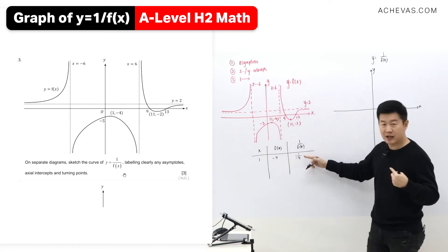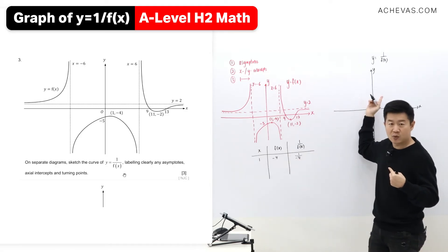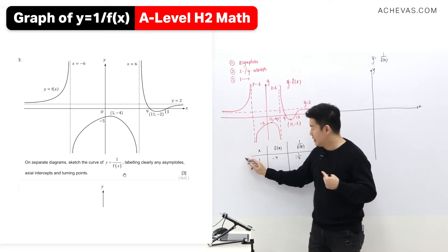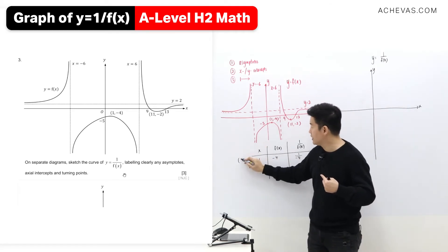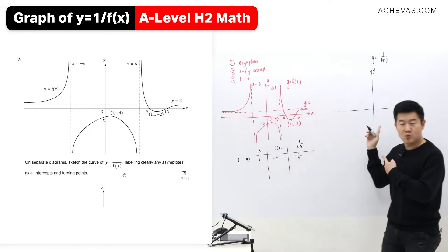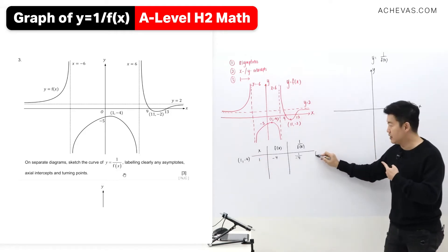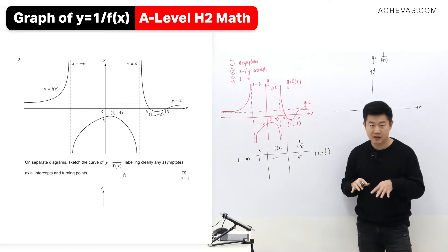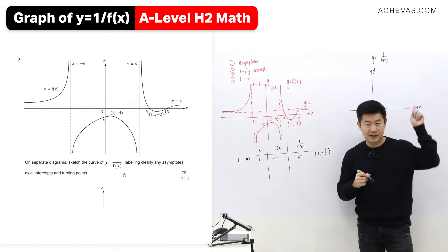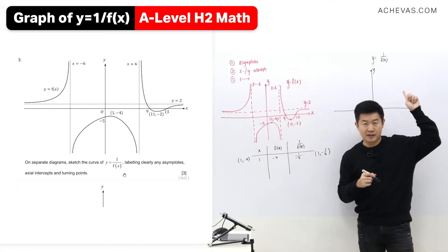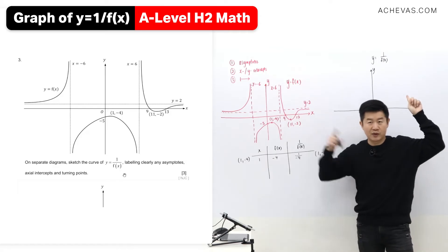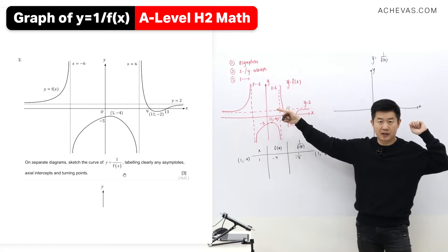This is going to tell me the new y coordinate, which means that the original y coordinate is minus 4. I'll be expecting the new y coordinate to be 1 and minus 1 quarter. Because the graph here has all the y coordinates equal to 1 over the original y coordinate.